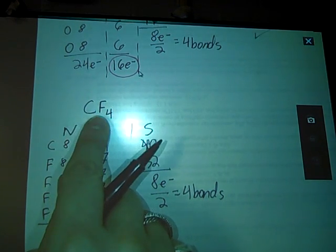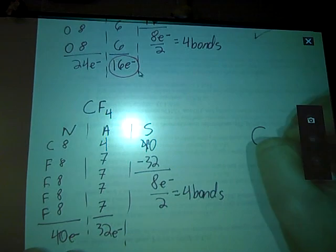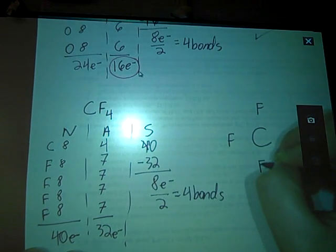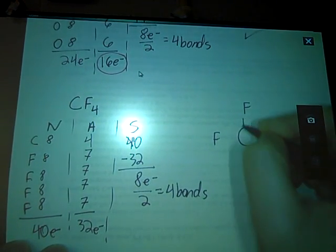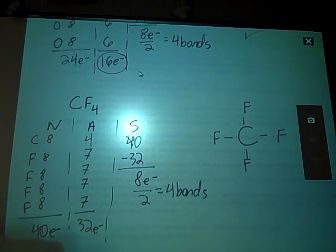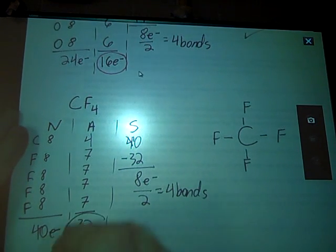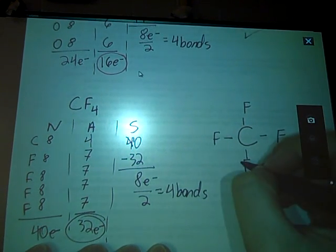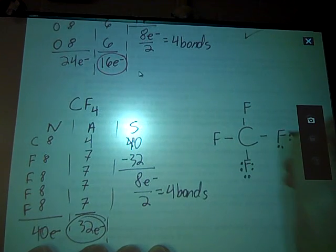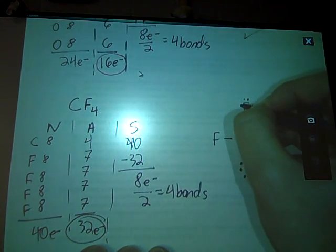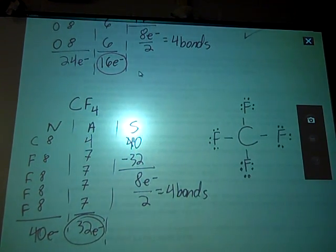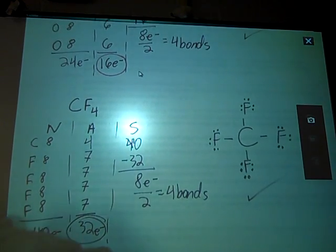Carbon goes in the middle with four fluorines on the outside, and I place four single bonds — one to each fluorine. Only carbon has a full octet so far. All 32 electrons must be present, so I count up and add lone pairs to each fluorine. After placing all 32 electrons, every atom has a full octet, the molecule is symmetrical, and the structure is good to go.